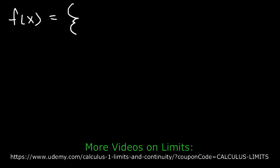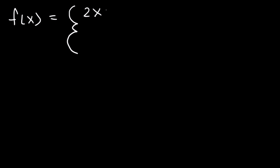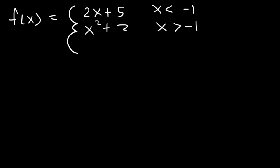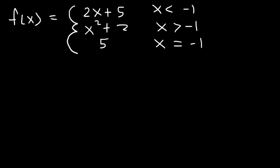Let's work on another example. Let f of x equal 2x plus 5 when x is less than negative 1, x squared plus 2 when x is greater than negative 1, and 5 when x equals negative 1. There's only one x value to be concerned about: x equals negative 1. Determine if it's continuous or discontinuous at negative 1, and if discontinuous, identify the type. Use the three-step continuity test.